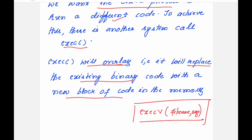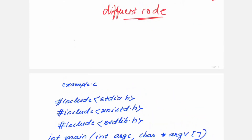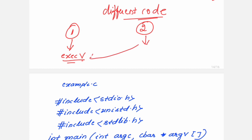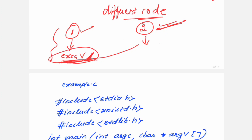The child process is running the same code as the parent. If we want the child process to run a different code, that different code is present in some file, and that file name you have to specify in EXECV. To demonstrate this, I require two files. The first file has the code using the EXEC system call, and the second file is the one whose code will replace the first.